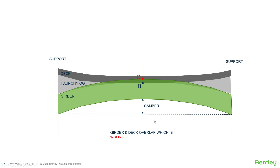Through OpenBridge Designer, there are two processes to handle this. One is an automated process that ensures C cannot go above B. There is also a manual process where the designer ensures C is always below B. Both of these will be demonstrated in OpenBridge Designer.